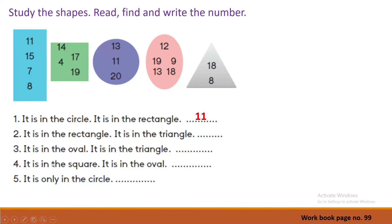Number 4: it is in the square and it is in the oval. Look at the shapes — square and oval. Which number can you see in both shapes? Yes — 19. Very good, the answer is correct.